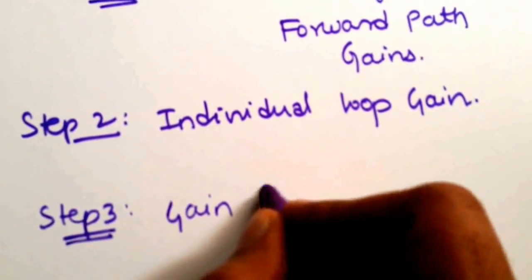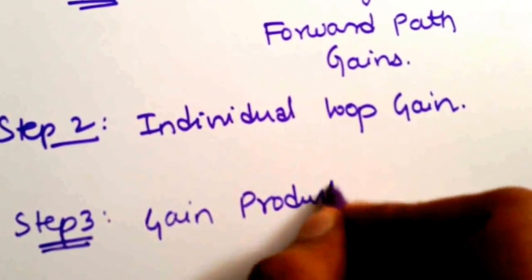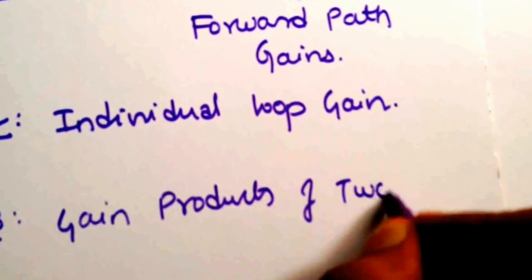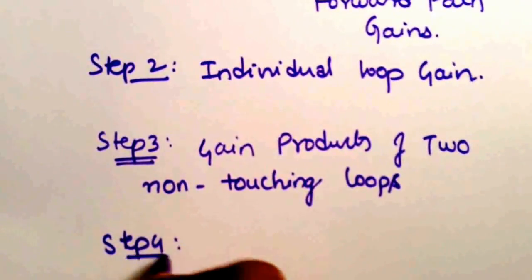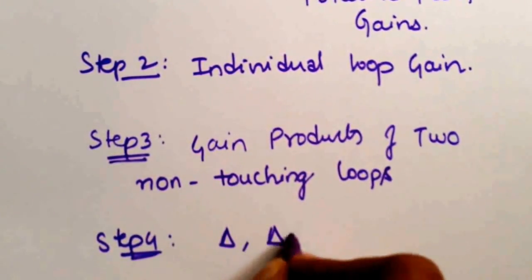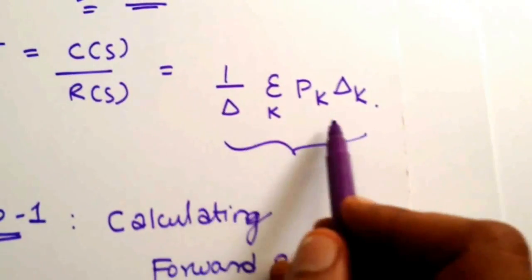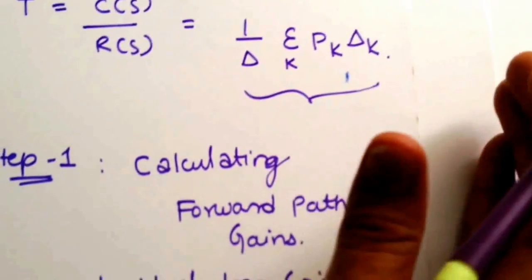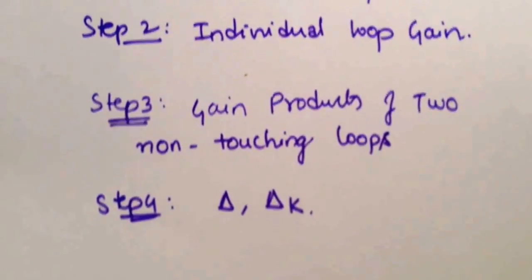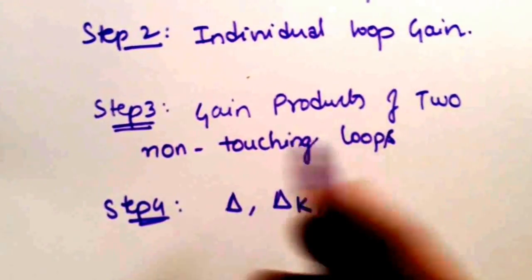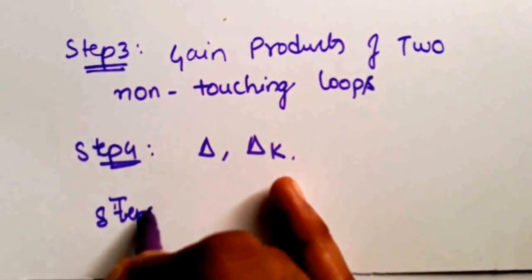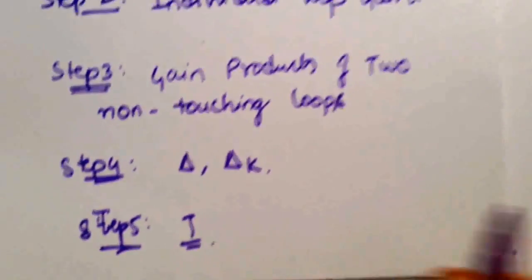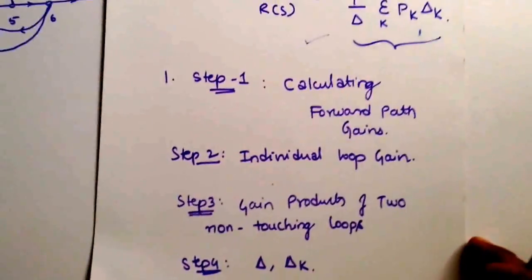Step four is calculating delta and delta_k. Delta_k is delta_1, delta_2, delta_3, and so on, depending upon the number of forward paths. Step five is the final step: calculation of the transfer function using Mason's gain formula.